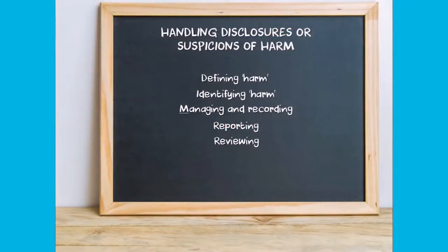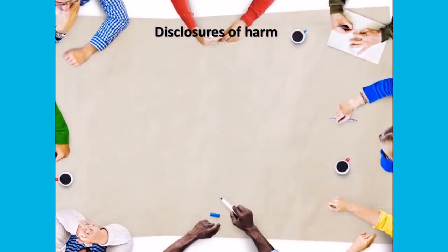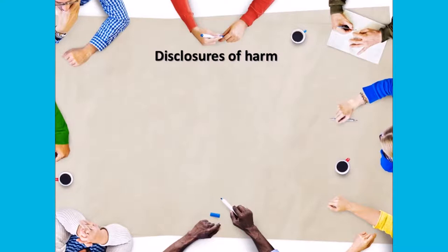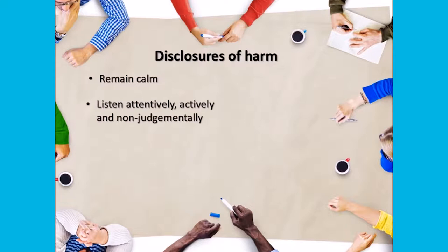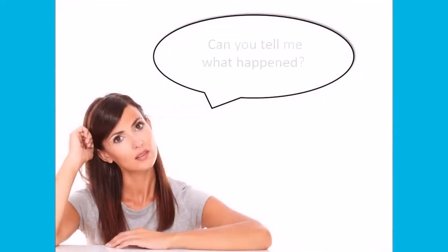Let's now look at managing and recording a disclosure or suspicion of harm. Your organization should document how staff and volunteers should receive a disclosure of harm from a child or young person or manage a suspicion of harm. When receiving a disclosure of harm, you may advise your staff that they should remain calm and listen attentively, actively and non-judgmentally, and ensure there is a private place to talk.